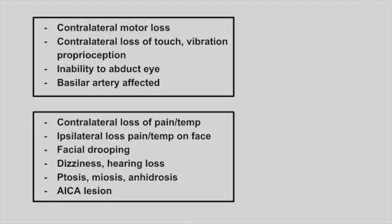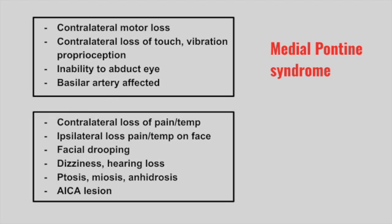Next is a patient with contralateral motor loss, contralateral loss of touch, vibration, and proprioception, and inability to abduct the eye; the basilar artery is affected. This is medial pontine syndrome. The motor loss and sensory deficits are due to the corticospinal tract and medial lemniscus tract being affected, and the inability to abduct is due to the abducens nerve being affected.